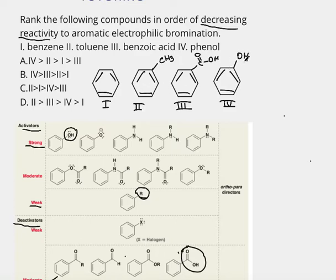we saw that the OH group is a strong activator, so it will be most reactive. Therefore, we need to start with number four. Number four, phenol, should be most reactive. So we can eliminate choices C and D.